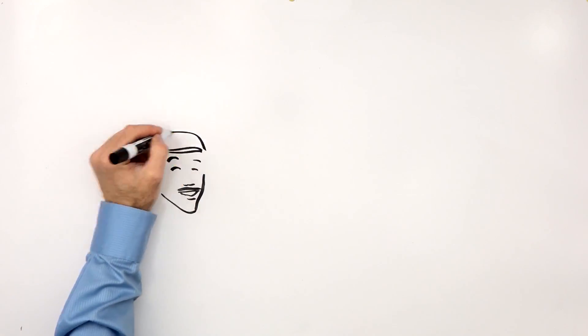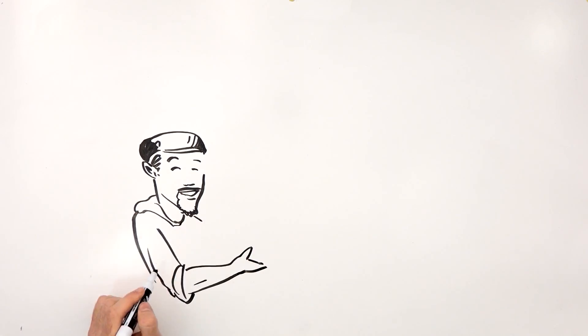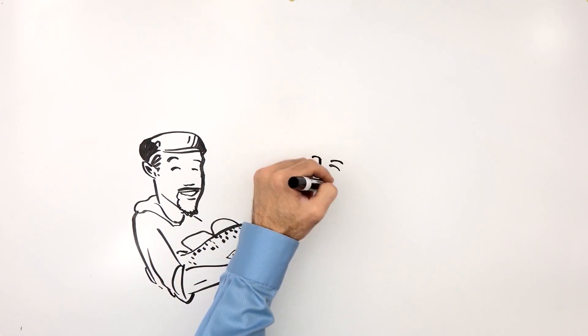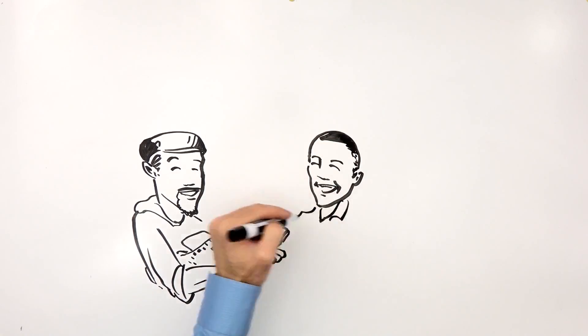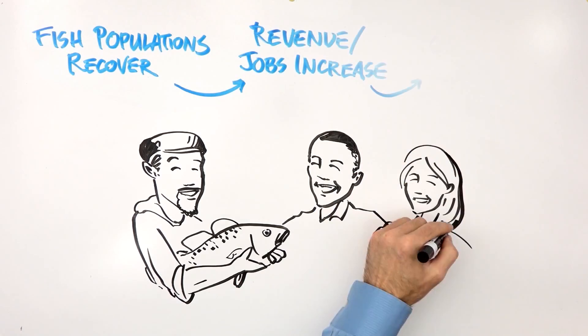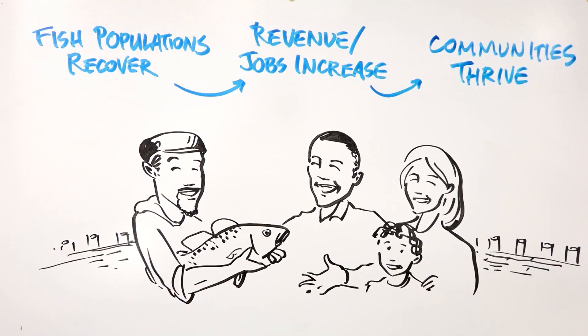To see lasting change on the water, it is time to demand EU leaders abide by the Common Fisheries Policy. Setting fishing limits not exceeding scientifically advised levels would allow fish populations to recover, resulting in additional revenue and jobs for the fishermen, thriving coastal communities and sustainable food for European consumers.